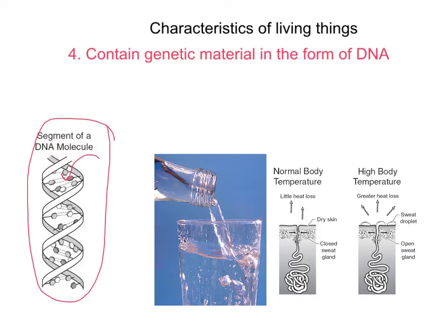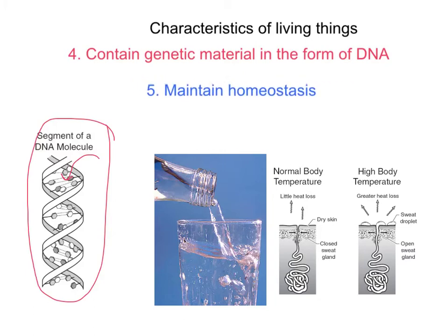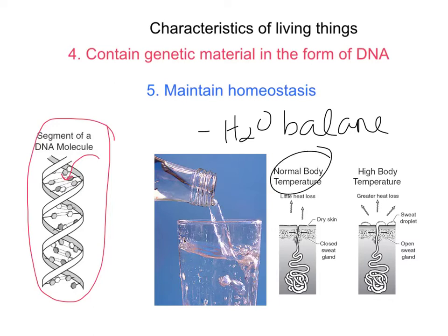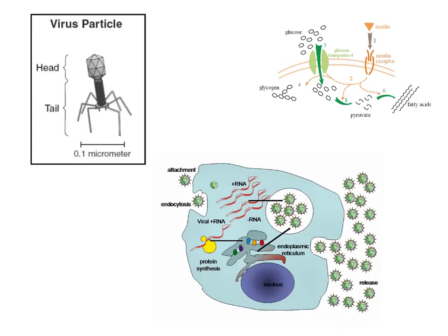Living things also have the ability to maintain homeostasis. By maintaining homeostasis, they can do things like balance water, regulate body temperature, and do certain chemical reactions that allow their body to maintain a steady rate — balancing their water, nutrients, and energy. Again, you'll see that viruses don't really do that. So we've kind of touched on some of the things that viruses cannot do and some of the reasons why they would be considered non-living.